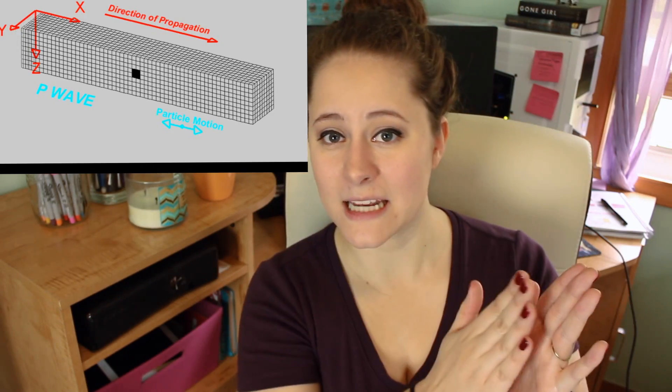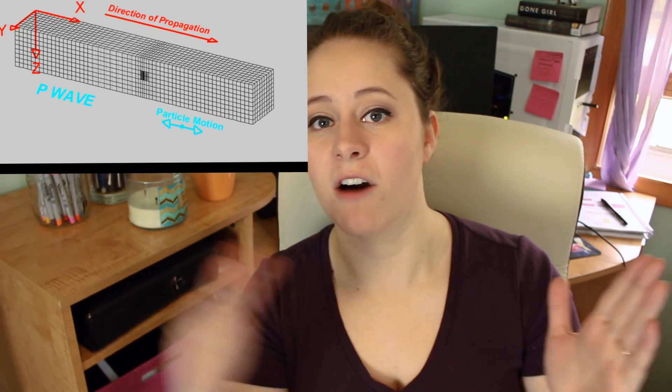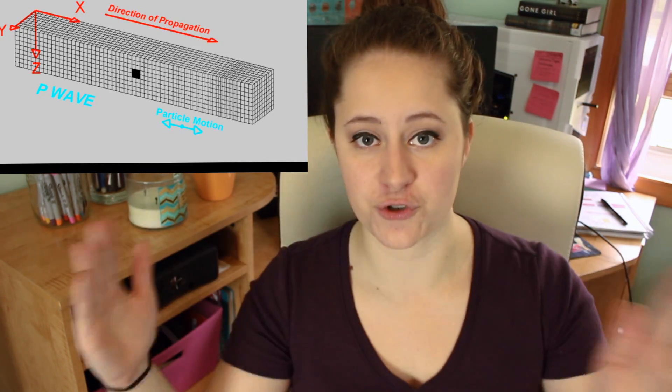Inside the category of body waves, we have P waves, or primary waves, and S waves, or secondary waves. Primary waves are called as such because they are the fastest — they will be the first ones to reach a seismic station and indicate that an earthquake is occurring. These waves are a type of compressional wave. If you think of a slinky, when you press it together and then pull it apart, that is the motion of this wave — the compress and stretch. The last important piece of information about P waves is that they will travel through both solids and liquids, which isn't the case with other waves.